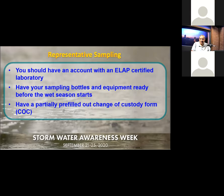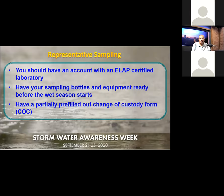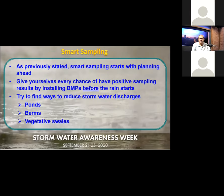Ideally use your own chain of custody, which you can customize with bottle types and constituents pre-printed. If the lab insists on their form, fill it out ahead of time — mark everything off except date, time, and sampler — so when you grab a sample, all you do is sign and date it. Smart sampling starts with planning ahead.